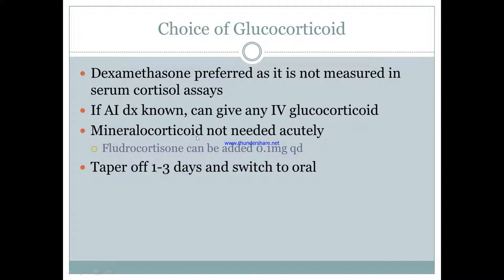If aldosterone is low due to adrenal insufficiency, you can give fludrocortisone, an aldosterone analog, at 0.1 mg once per day. But initially it's not needed because it takes a while for the sodium channels to kick in. You should taper the glucocorticoid over one to three days IV and then switch to oral to avoid a rebound effect.